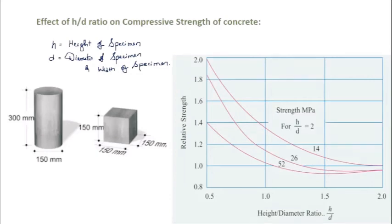In this video, let us see the effect of h by d ratio and the unit weight on compressive strength of concrete. Let us start with the h by d ratio. So what is h by d ratio? h indicates the height of specimen and d implies diameter of the specimen or width of the specimen.